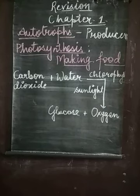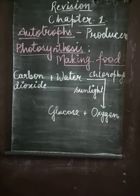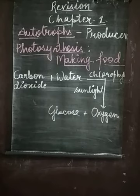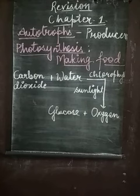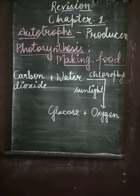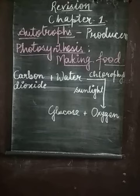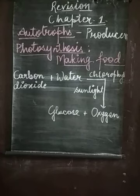Once photosynthesis takes place, the food prepared as glucose gets transferred to different parts of the plant and stored in some parts. For example, in carrot, food is stored in the roots; in spinach — which is the leaf of the plant — food is stored in the leaves; in potato, which is an underground stem, food is stored in the stem. We eat whichever part of the plant stores the food. The oxygen released during photosynthesis goes into the atmosphere and is a life-supporting gas essential for the survival of animals, humans, and even plants.